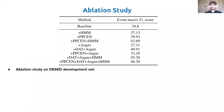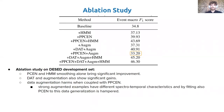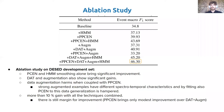To assess the validity of the proposed approaches, we performed an ablation study. It can be seen that parallel per-channel energy normalization and HMM smoothing alone can bring significant improvement. Domain adversarial training and dynamic augmentation also show significant gains. Interestingly, data augmentation harms performance when coupled with parallel per-channel energy normalization. In fact, strongly augmented examples have different spectro-temporal characteristics, and by fitting the parallel per-channel energy normalization layer with this data, generalization is hampered. By combining all techniques, a 10% gain over the baseline is reached. We believe there is margin for improvement because parallel per-channel energy normalization brings only modest improvement over domain adversarial training plus augmentation plus HMM.